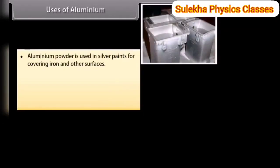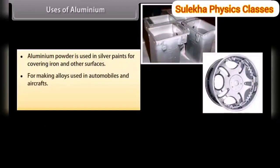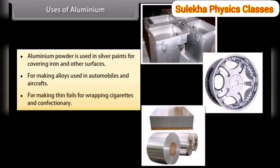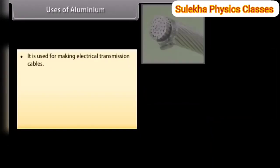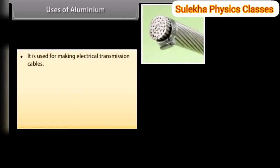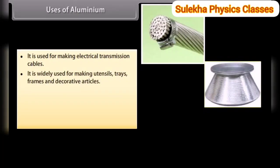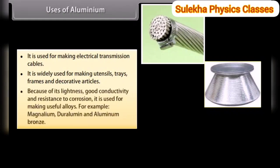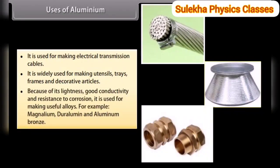Uses of aluminium. Aluminium powder is used in silver paints for covering iron and other surfaces. It is used for making alloys in automobiles and aircraft, and for making thin foils for wrapping cigarettes and confectionery. It is used for making electrical transmission cables and widely used for utensils, trays, frames and decorative articles because of its lightness, good conductivity and resistance to corrosion. It is used for making useful alloys such as magnalium, duralumin and aluminium bronze.